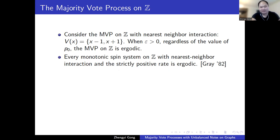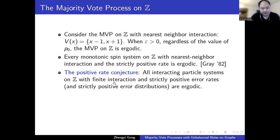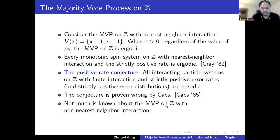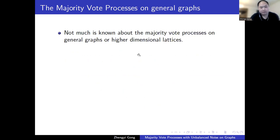The Liggett-Gray result is the best known toward the famous positive rate conjecture, though the story won't be covered here. Beyond nearest-neighbor interaction on Z, not much is known about majority vote processes. If the voting neighborhood contains any non-nearest-neighbor sites, this is actually an open problem. Similarly, not much is known for majority vote processes on general graphs or higher-dimensional lattices.